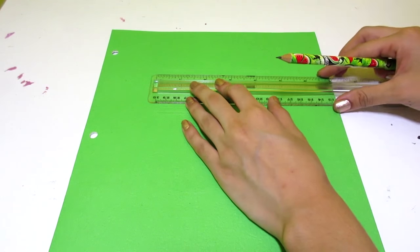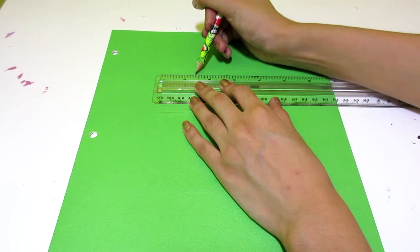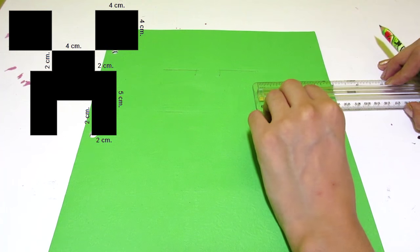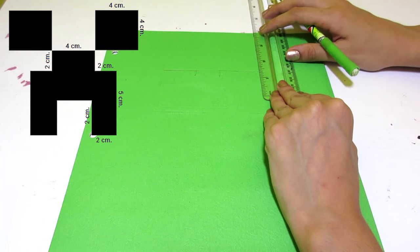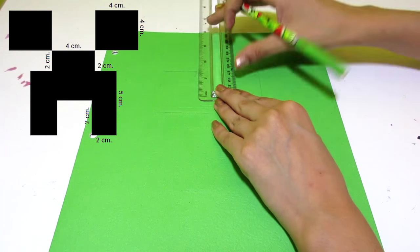Next up, we're going to be making a Creeper folder. So we're going to use the same supplies once again, except this time we're going to be doing it on a green folder. So again, begin drawing your Creeper face just like we did on the pencil case. Since the folder is a larger surface, I'm going to be making the Creeper face a little bit bigger.